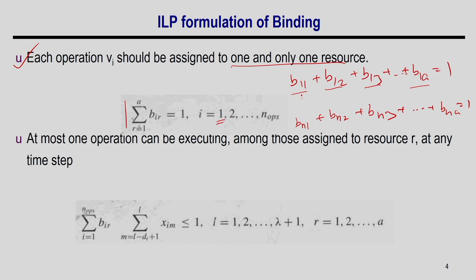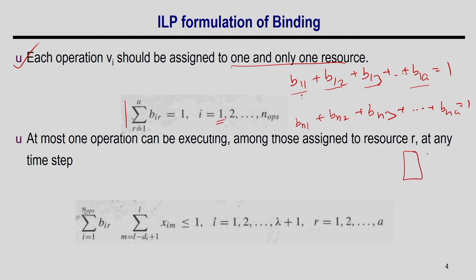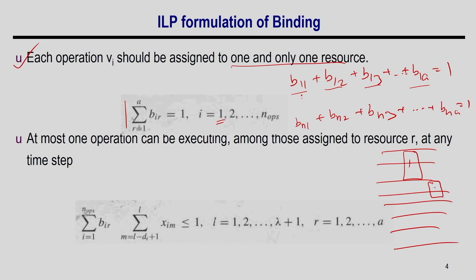The next constraint addresses hardware resources. Assume a FU — a multiplier — that can execute only one operation per clock. Although multiple operations may be mapped to that FU, it can execute at most one at a time. For example, say a 2-cycle multiplier handles operations 3 and 7: it does op3 in cycles 1–2 and op7 in cycles 3–4, but only one operation at any given clock.